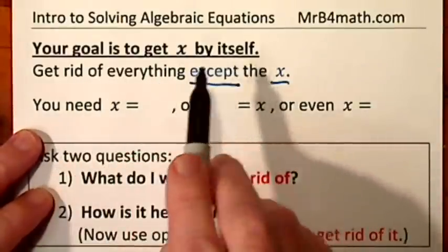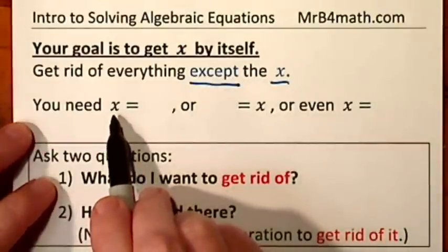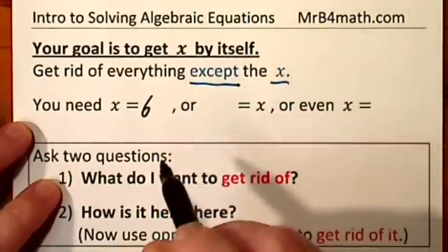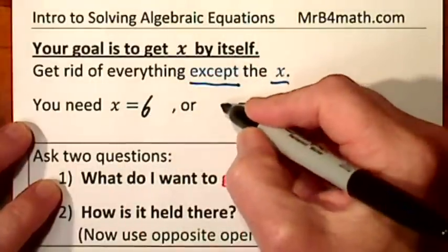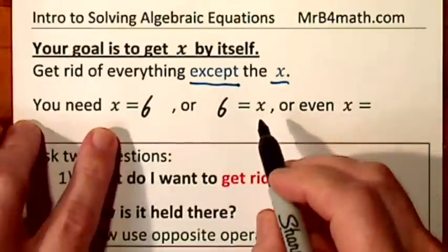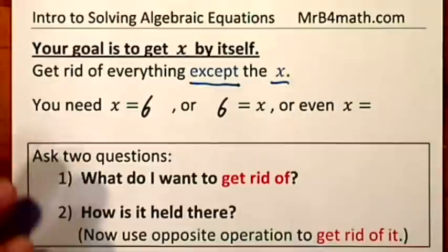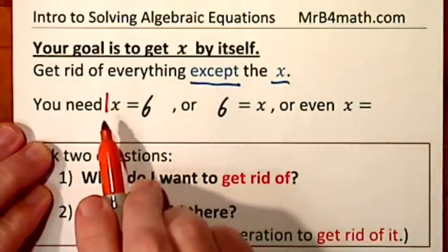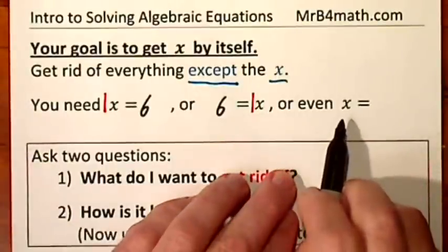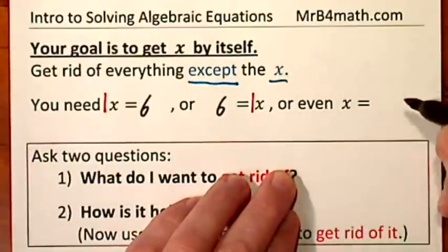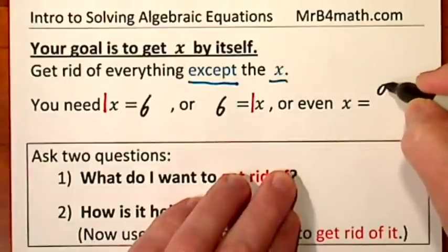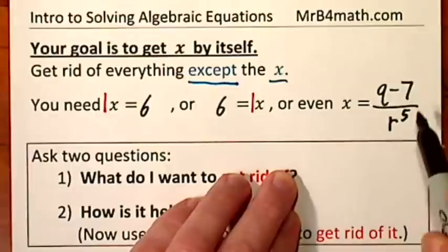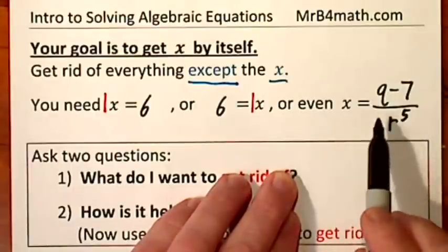When I say get x by itself, I want to show you what that means. This x is by itself — whatever's on the other side doesn't matter. If you have x equals 6, that's fine. If you have 6 equals x, that's fine. In both of these cases, x is by itself. Now technically by itself it's 1x, but we don't have to write the 1. Even if on the other side of the equal sign you have something like q minus 7 over r raised to the fifth power, it doesn't matter — you have x by itself. You solved the algebraic equation.